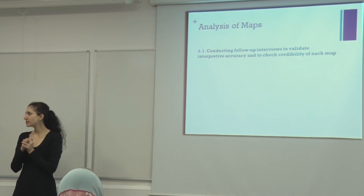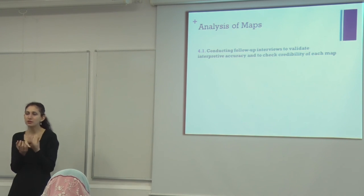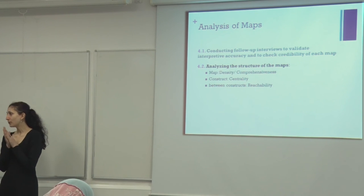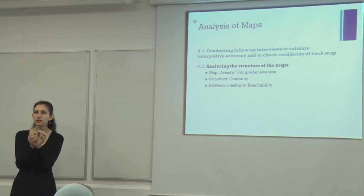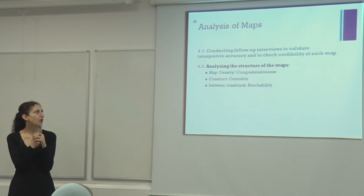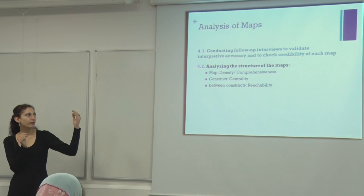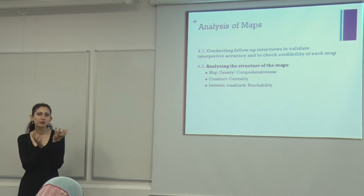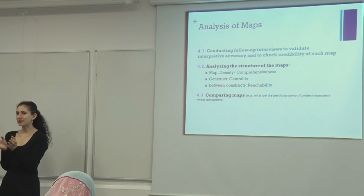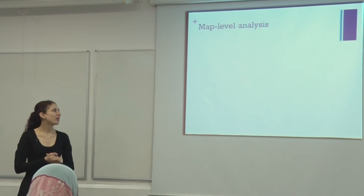Once the maps are constructed — without numbers yet — the next step is to analyze them. Much of our effort went into developing measures for this, as existing CCM had definitions but no clear guidelines. Before analysis, we showed constructed maps back to interview participants to confirm credibility and trustworthiness. Then we analyzed the structure of the maps at three levels: map level, construct level, and between-construct level. At the map level, there are two measures: comprehensiveness and density.